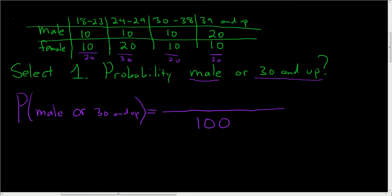Here's the trick: whenever there's an OR in the problem and you have a table, all you do is circle everything and add. The total goes in the bottom, always. Then you circle all the males — those are the males.